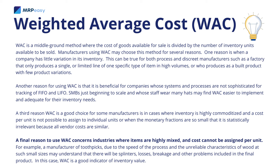A final reason to use weighted average cost concerns industries where items are highly mixed and cost cannot be assigned per unit. For example, a manufacturer of toothpicks — due to the speed of the process and the unreliable characteristics of wood at such small sizes — may understand that there will be splinters, losses, breakage, and other problems included in the final product. In this case, weighted average cost is a good indicator of inventory value.